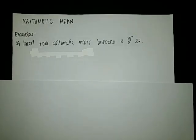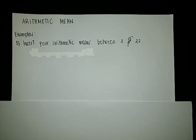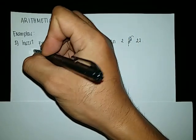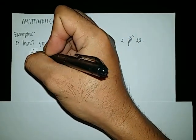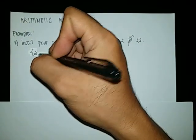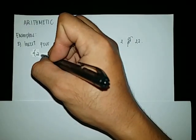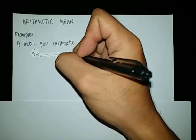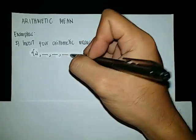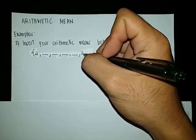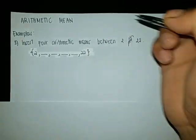For example, insert four arithmetic means between 2 and 22. Our arithmetic sequence will have 2 as the first term and 22 as its last term, with four numbers between them. So let us leave those four numbers blank and insert them later, giving us: 2, blank, blank, blank, blank, 22 as the last term.